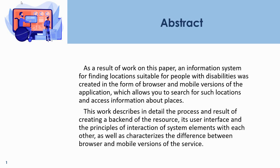Abstract. As a result of work on this paper, an information system for finding locations suitable for people with disabilities was created in the form of browser and mobile versions of the application, which allows you to search for such locations and access information about places. This work describes in detail the process and the result of creating a backend of the resource, its user interface, and the principles of interaction of system elements with each other, as well as the difference between browser and mobile versions of the service.